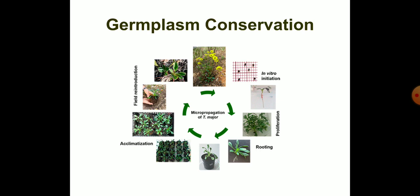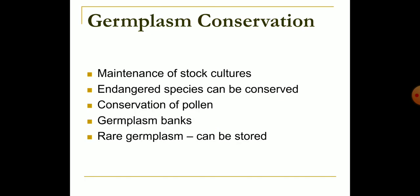The objective of germplasm conservation is to preserve the genetic diversity of a particular plant or genetic stock for use at any time in the future. Germplasm storage is an ideal method to avoid subculturing and maintain cell tissues in a viable state for many years. Plant materials from endangered species can be conserved. Conservation of pollen for enhancing longevity, establishment of germplasm banks for exchange of information at international level, and rare germplasm developed through genetic manipulations can be stored.